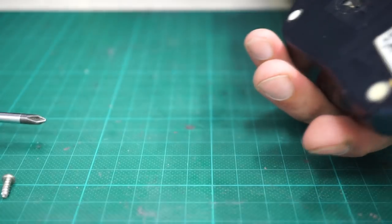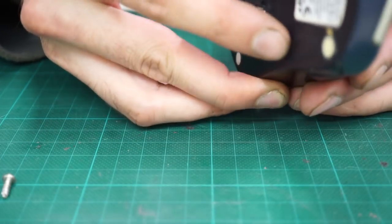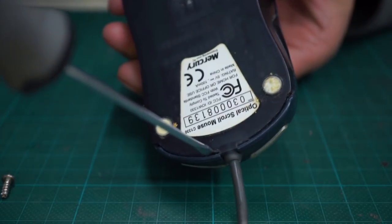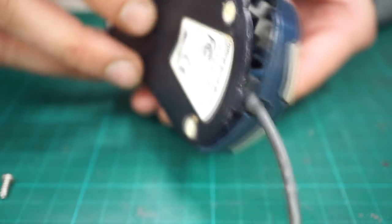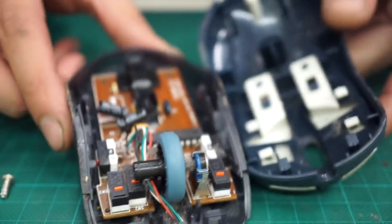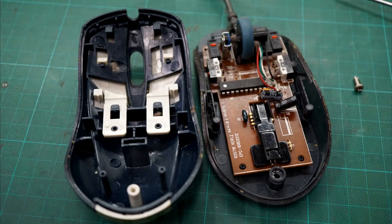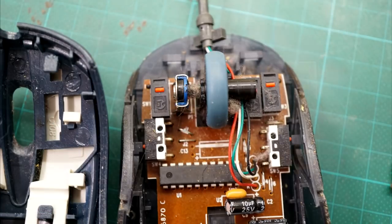First of all I loosen the only screw and carefully open the mouse, so I don't break some housing pins which hold the mouse together. And there I can clearly see the first problem: dirt, dirt and dirt. Okay, there's not even so much dirt for 15 years of daily use.